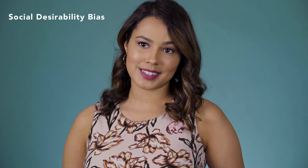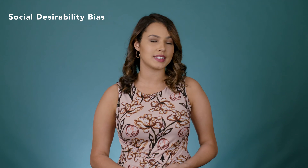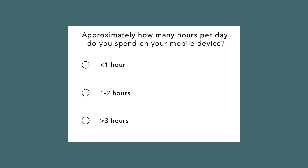Moving on, it's no secret that we like to project our best selves. But this want to be perceived as our ideal image results in a response bias: the social desirability bias. This bias is the tendency to over-report socially desirable behaviors and characteristics, but under-report socially undesirable ones. Think of a survey question like: approximately how many hours per day do you spend on your mobile device? Respondents are more likely to underestimate the amount of time they spend on their phones because excessive phone usage is often perceived as socially undesirable.